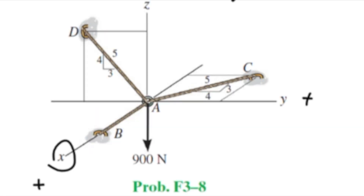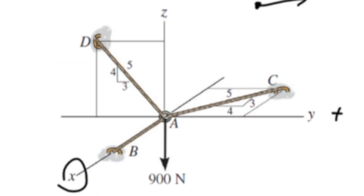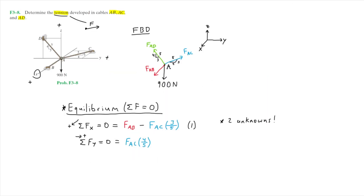Looking at the xy plane, cable AC has a component along the y axis. Hence we have the y component of force AC which is FAC times four over five, and this points in the positive y direction. Next, cable AD also has a component along the y axis.